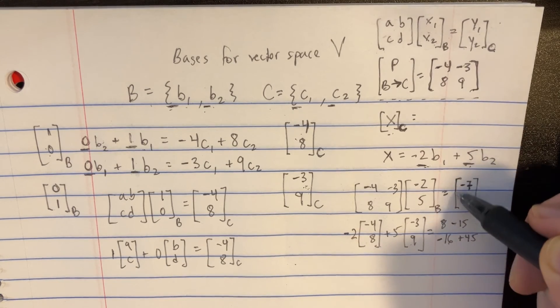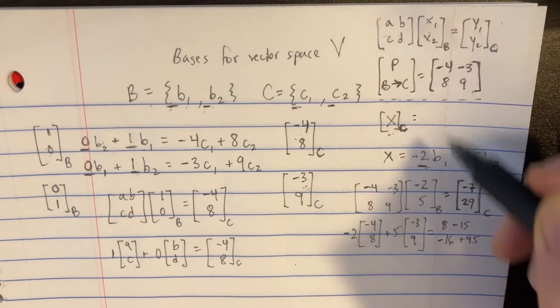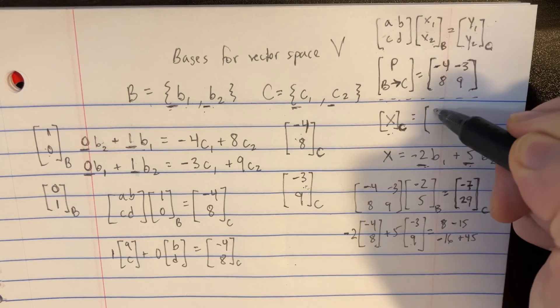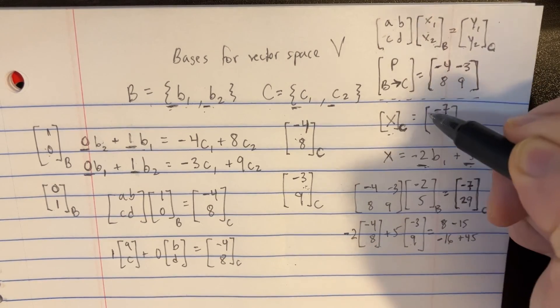So we've got both answers now. This is going to be our X_C. So we can put that over here. Negative 7, 29. So there we go.